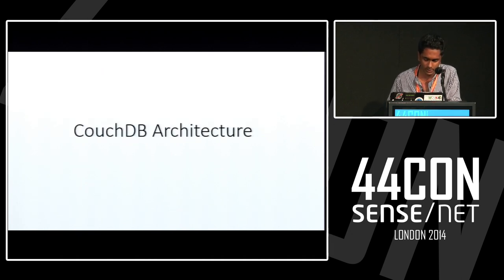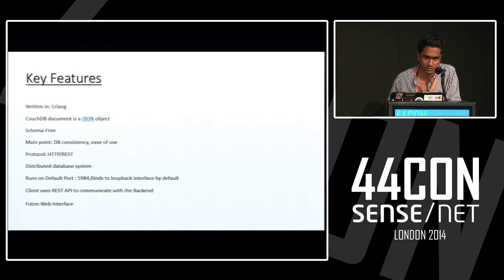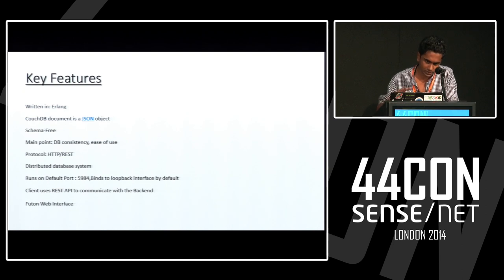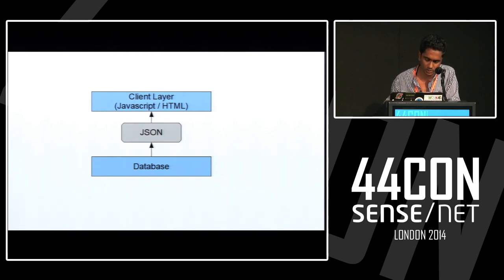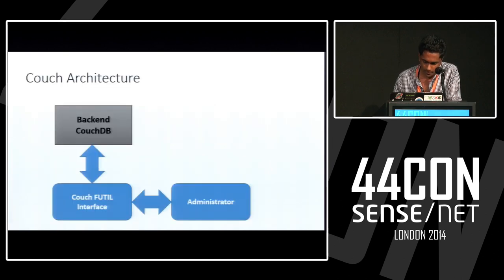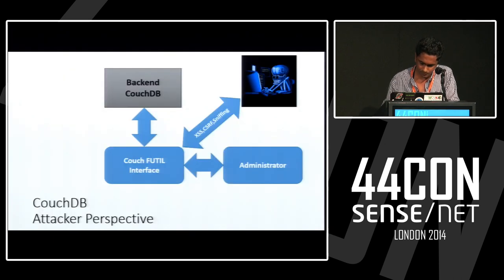Let's move on to CouchDB. Some key features: it was written in Erlang. CouchDB documents use JSON objects. It's schema-free. It uses the HTTP REST protocol, and the client uses the REST API to communicate with the backend. It runs on port 5984 by default and has the Futon web interface. The basic architecture includes the database, JSON data objects, and the Futon client layer. The administrator communicates using the Futon interface. Attacks possible include cross-site scripting, CSRF attacks, sniffing authentication cookies, and cross-site port attacks.